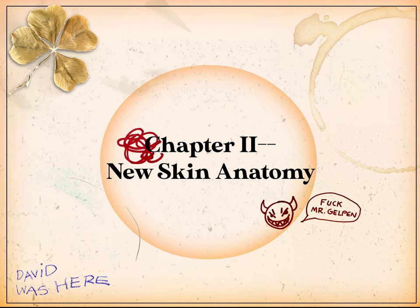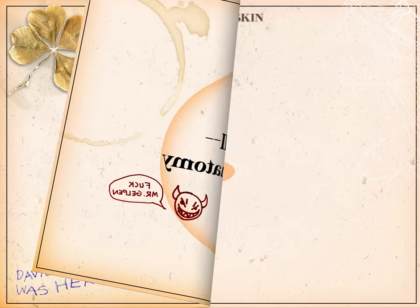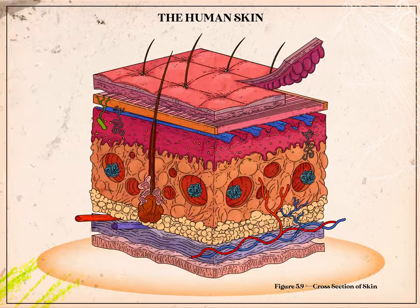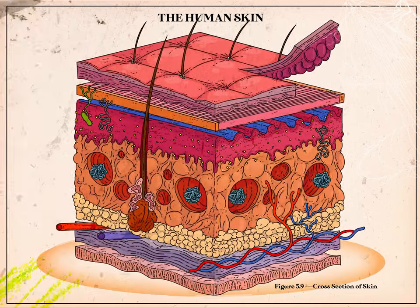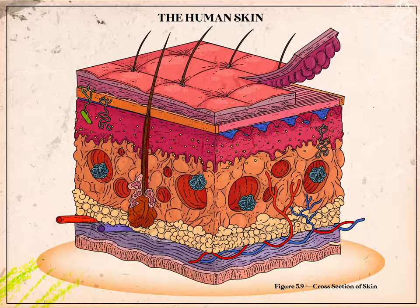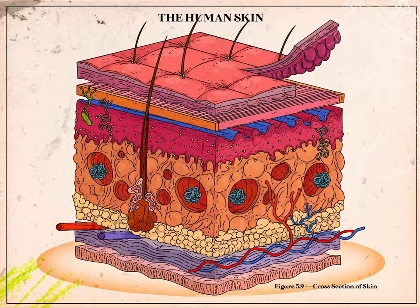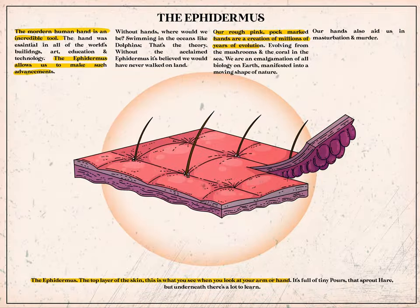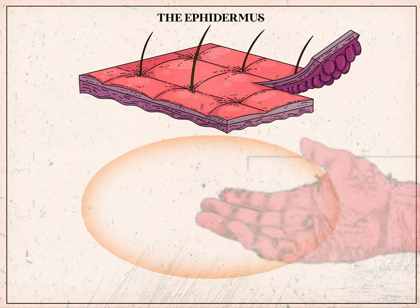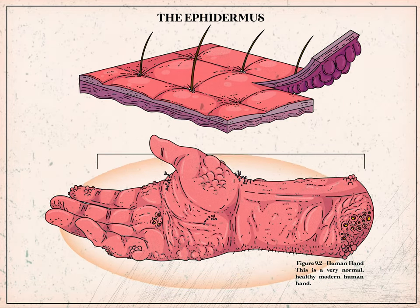Now this is a video lesson, so if I went over any part too quickly, feel free to go back and take notes over anything you might have missed. Let's zoom out a little. Here we have a cross section of human skin — a good example of what your cells are capable of. Obviously we have the epidermis, the top layer of the skin. This is what you see when you look at your arm or hand.